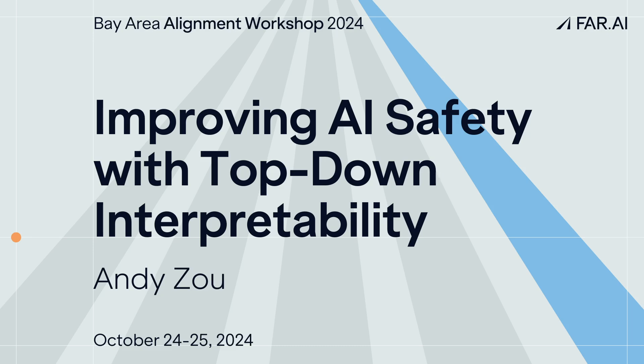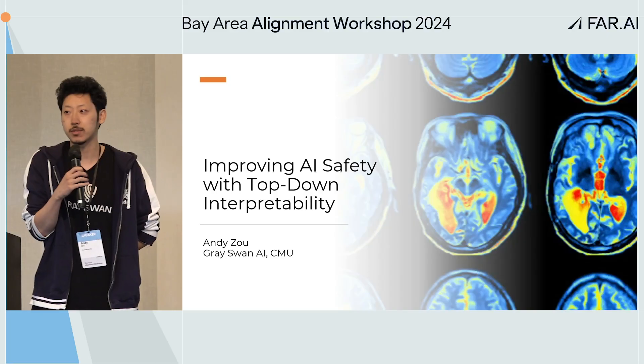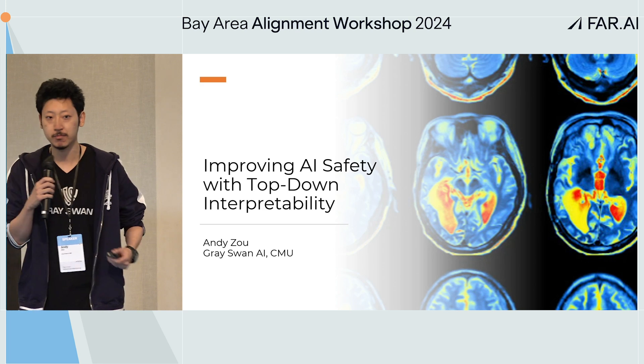My name is Andy, and I'm going to be talking about improving AI safety with top-down interpretability. There's a saying repeated by researchers in adversarial robustness: attacks on systems that people don't use don't matter too much.